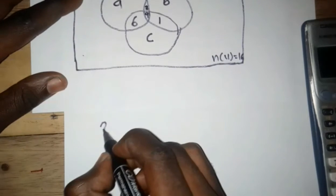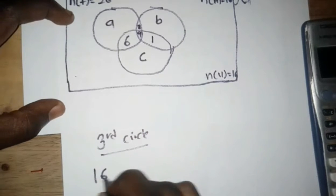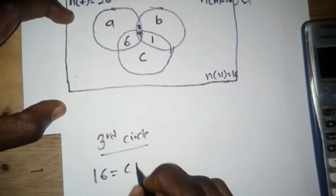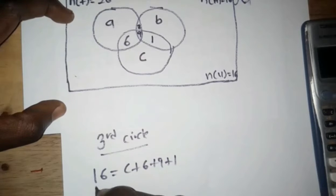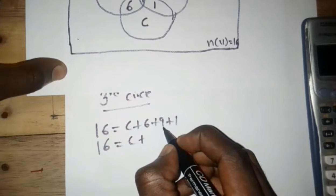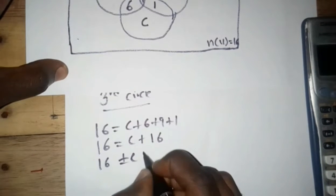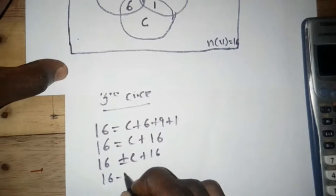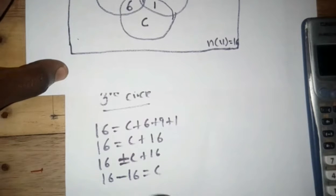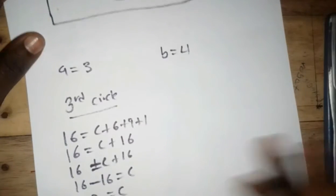Now the third circle — volleyball. We have: 16 = c + 6 + 9 + 1. So 16 = c + 16. Therefore c = 16 − 16 = 0. So c equals 0. That gives us our values for a, b, and c.